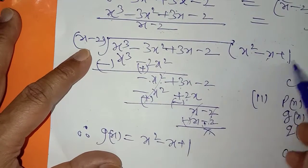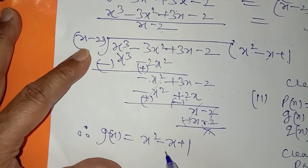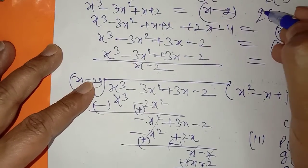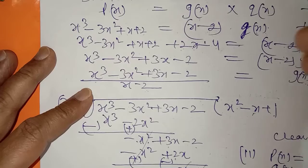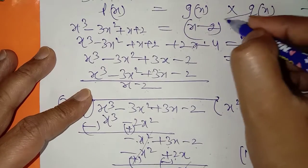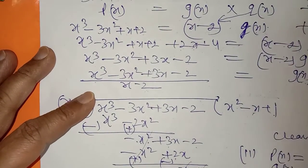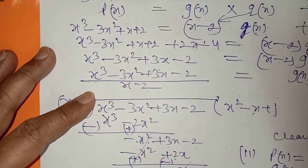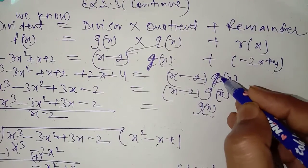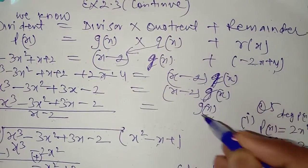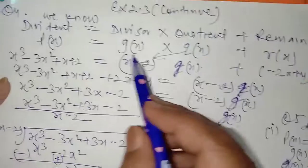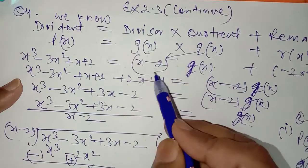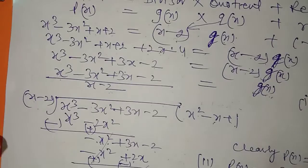تو یہ جو answer آیا وہ gx کے equal ہوگا۔ ہمیں یہاں gx نکالنا ہے، اور یہ qx دے رکھا ہے۔ You have to find gx — کس سے divide کریں؟ gx پتہ لگانا ہے، quotient ہمیں دے رکھا ہے۔